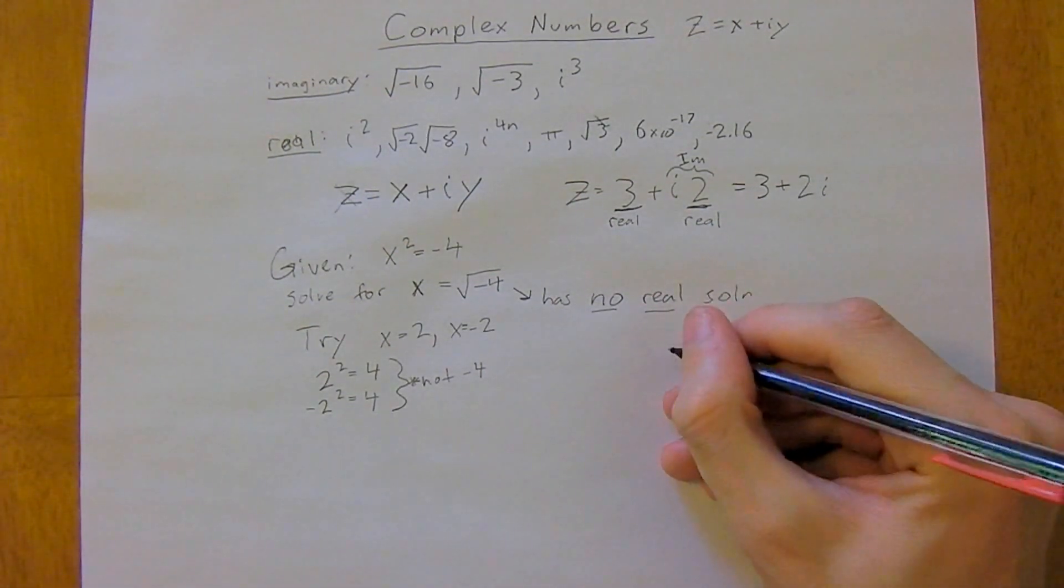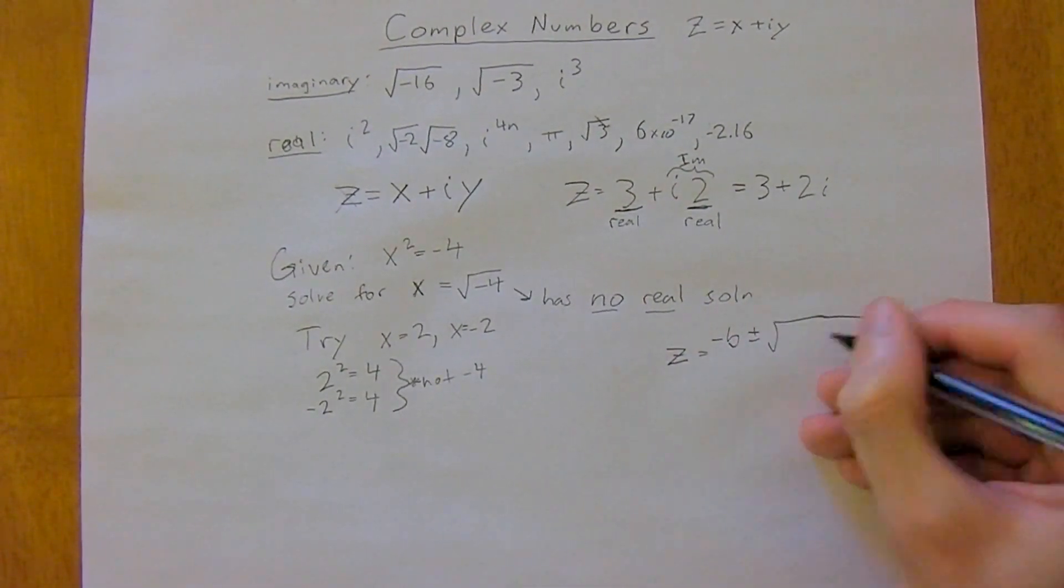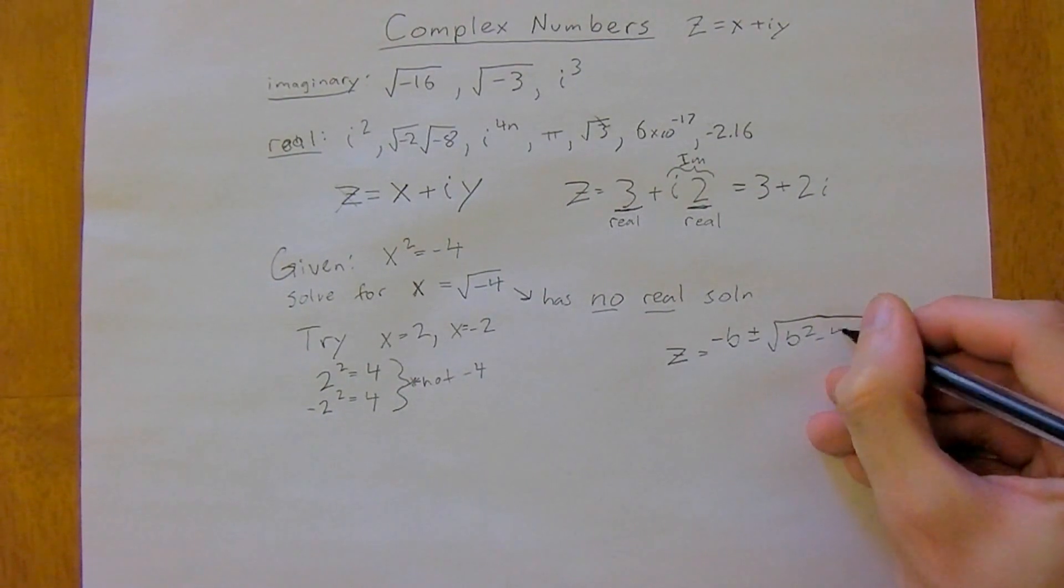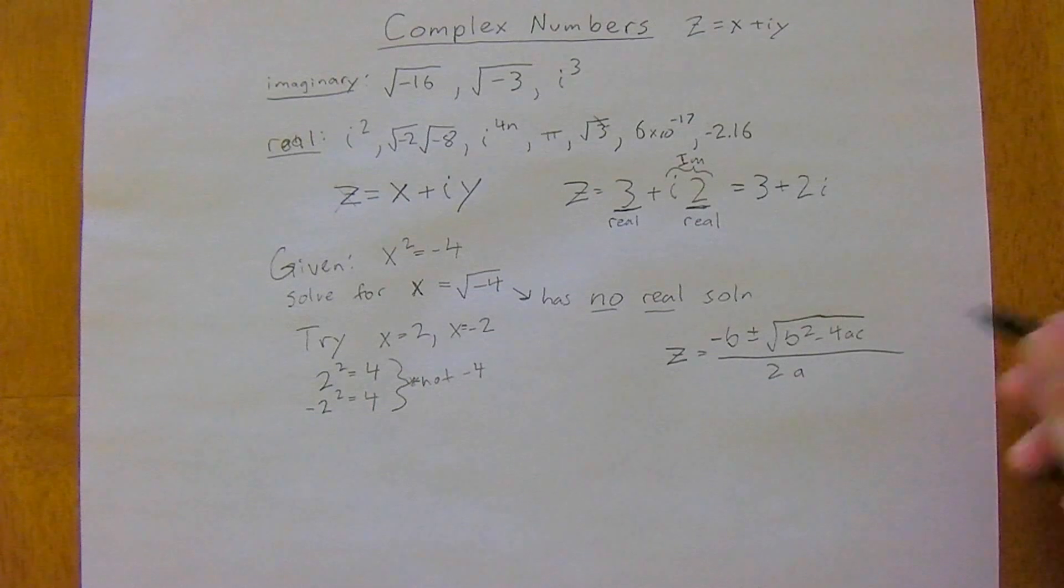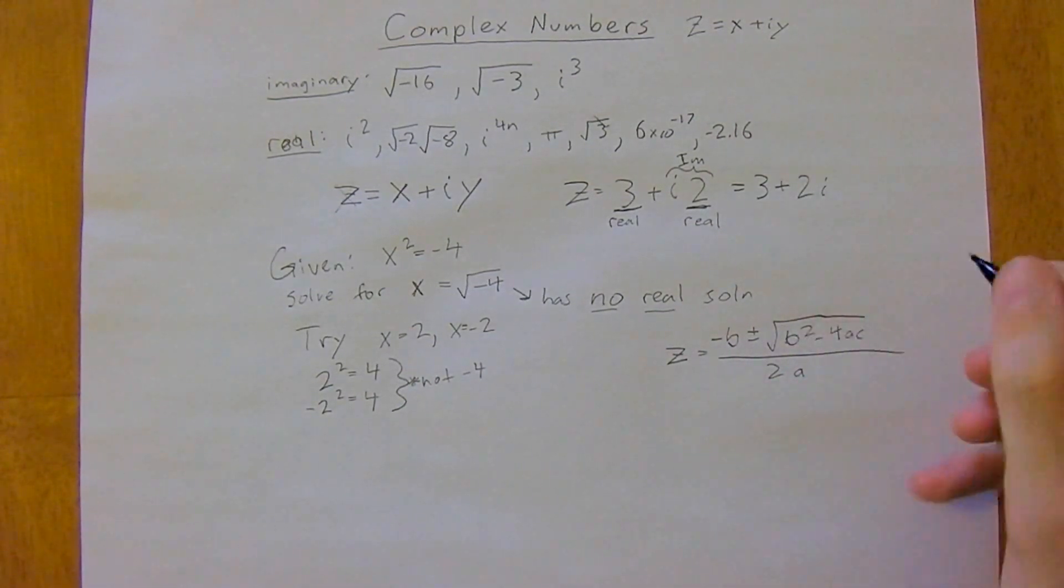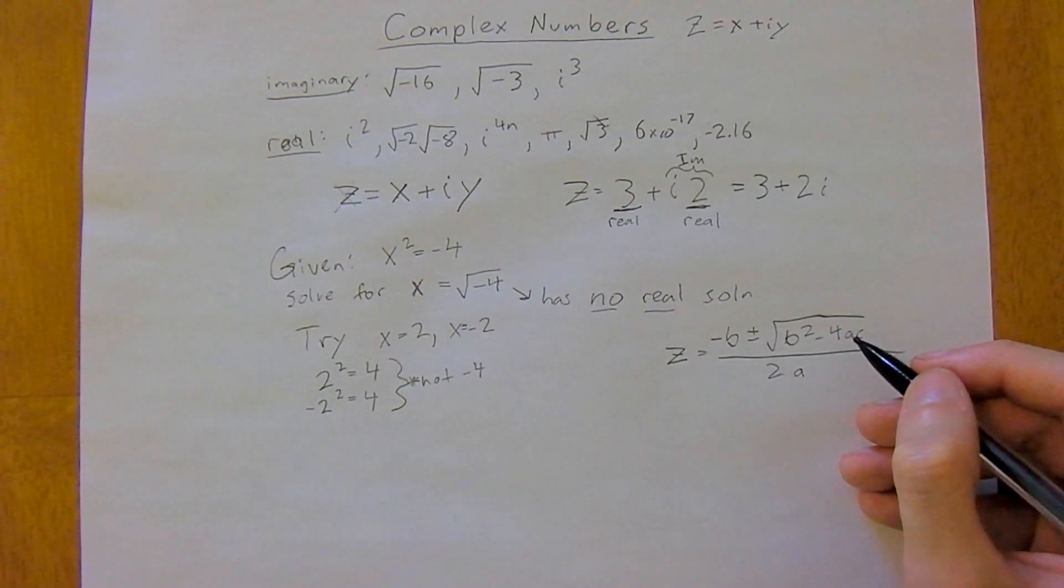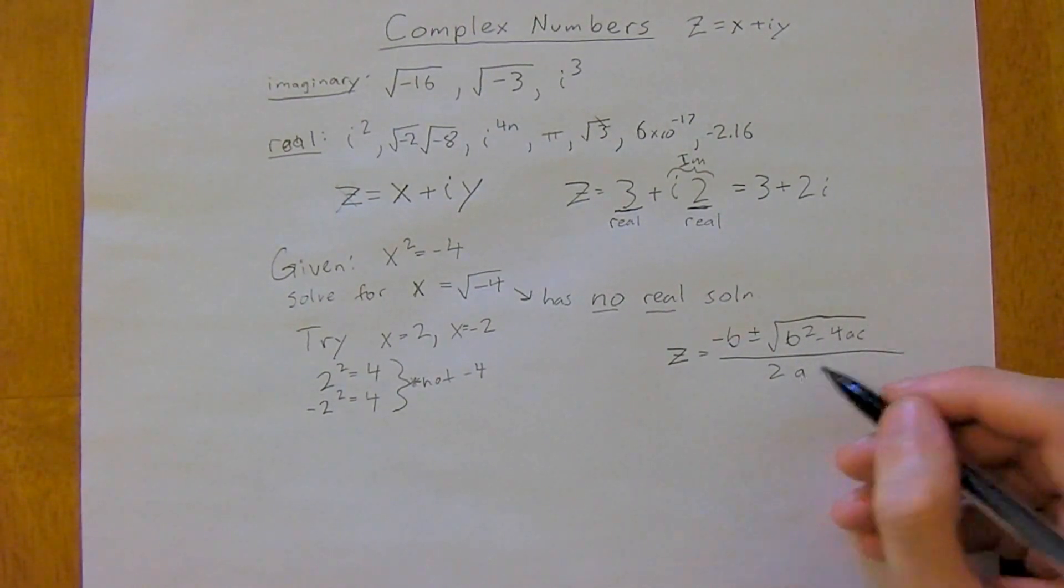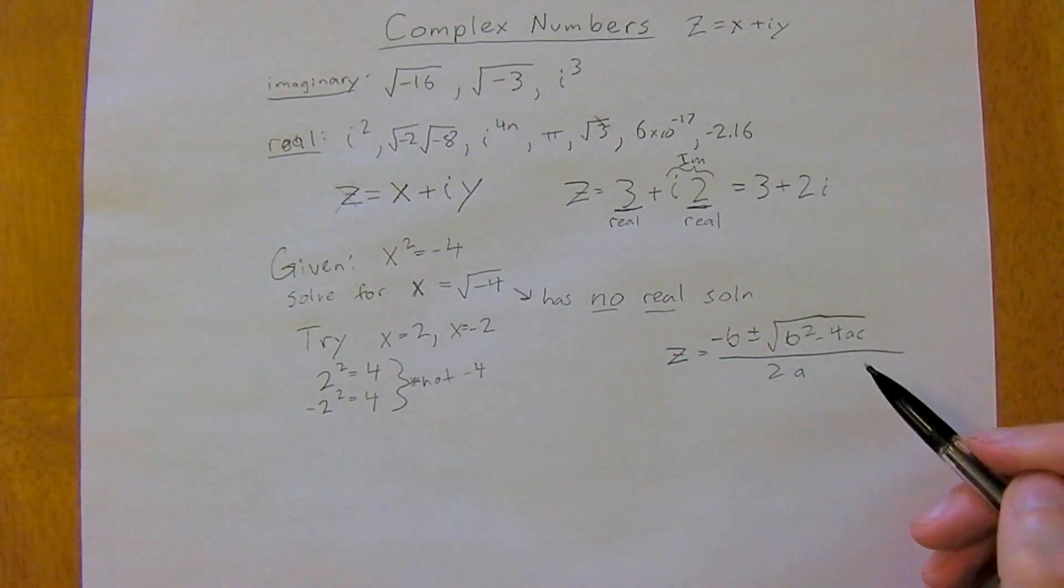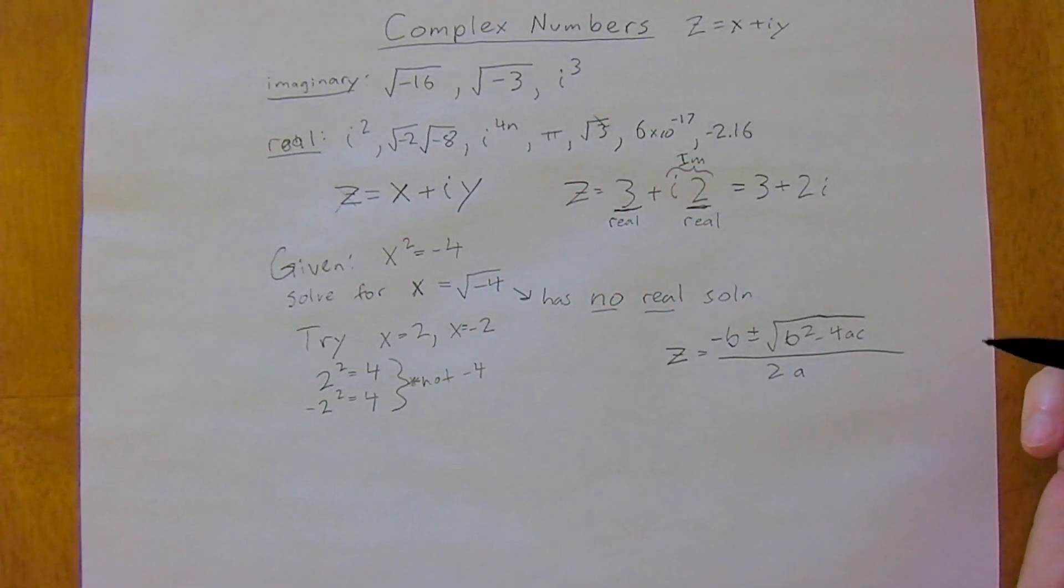If you have negative b—some of you are probably starting to recognize this—minus 4ac divided by 2a, so the quadratic formula. Well often what's inside here, the determinant, will be negative, and that actually does have some meaning to it. So we need to find a way to deal with negative square roots, and that is where imaginary numbers and complex numbers come in.